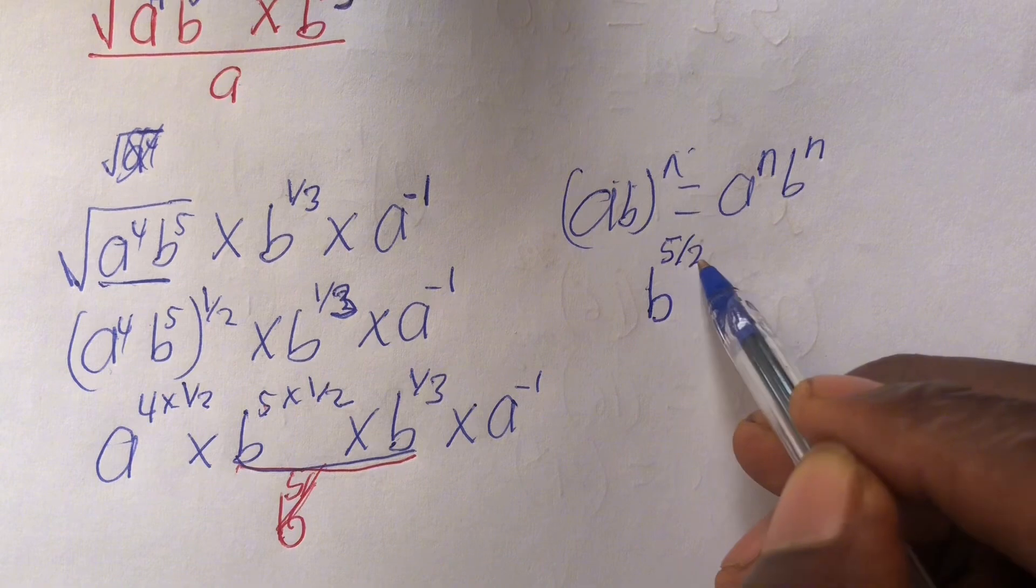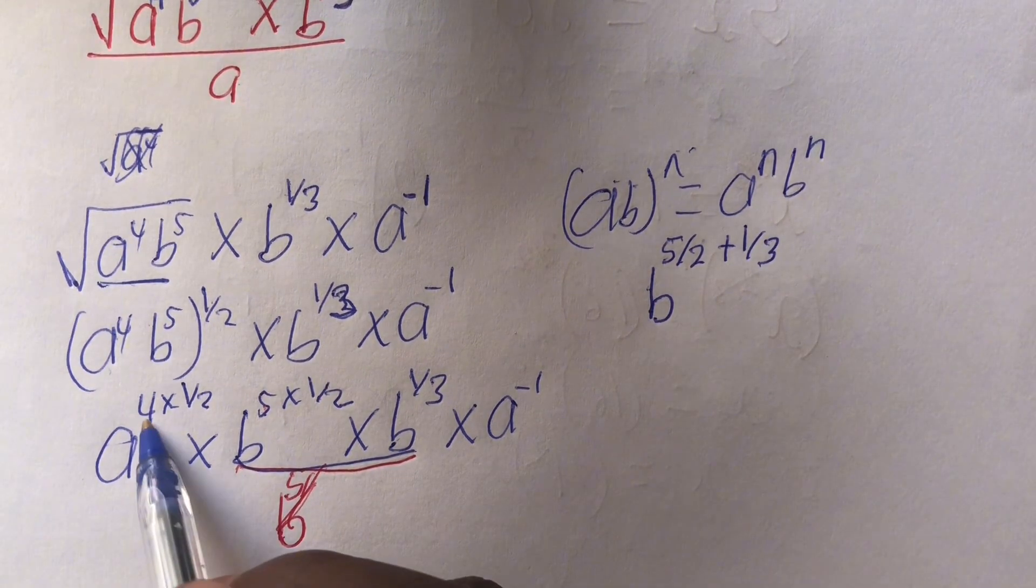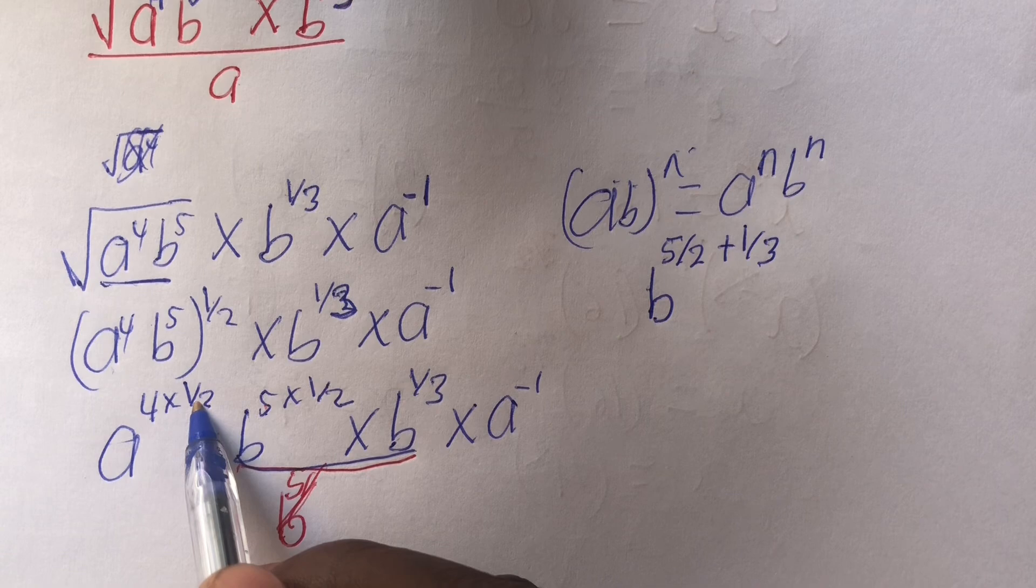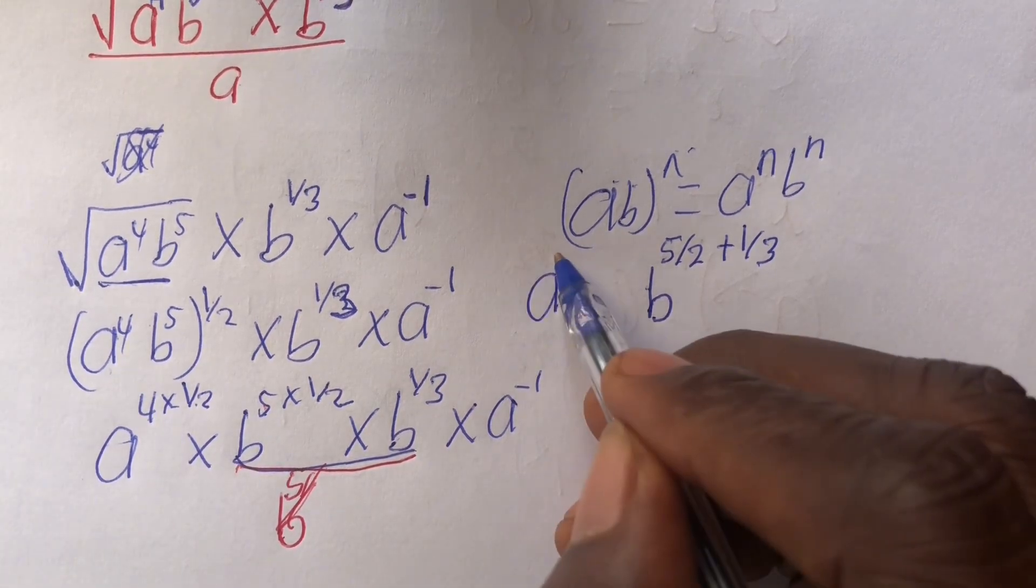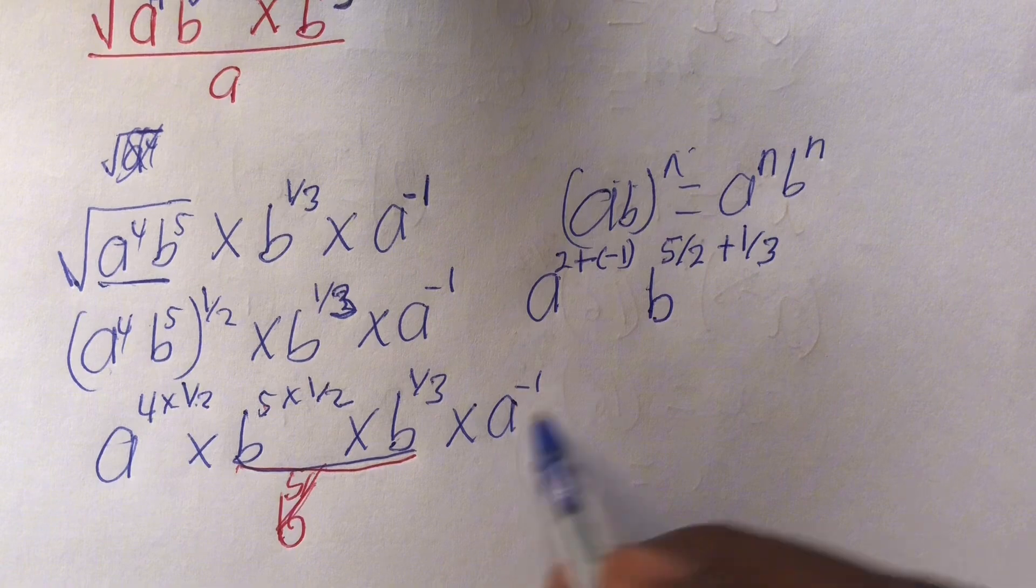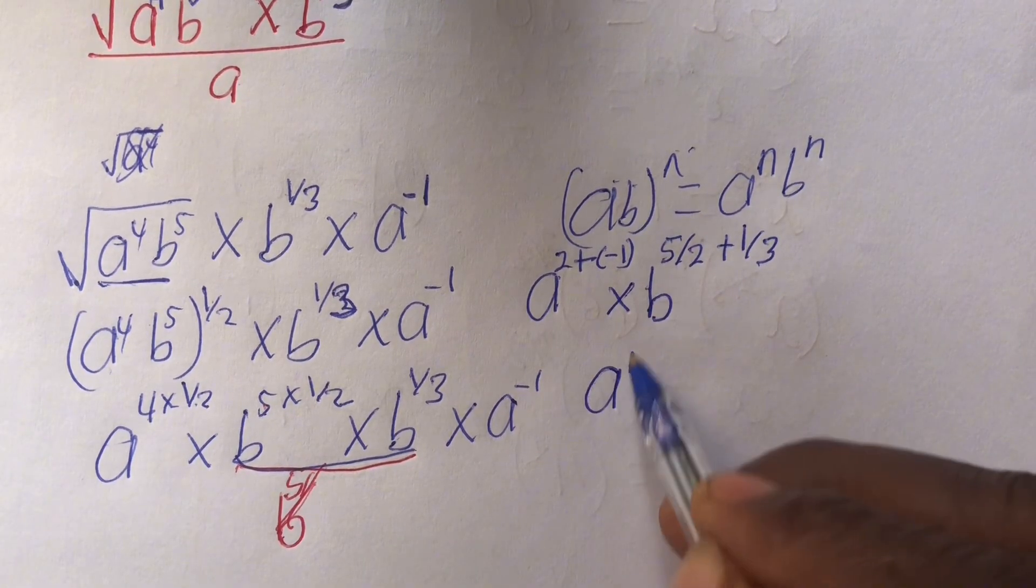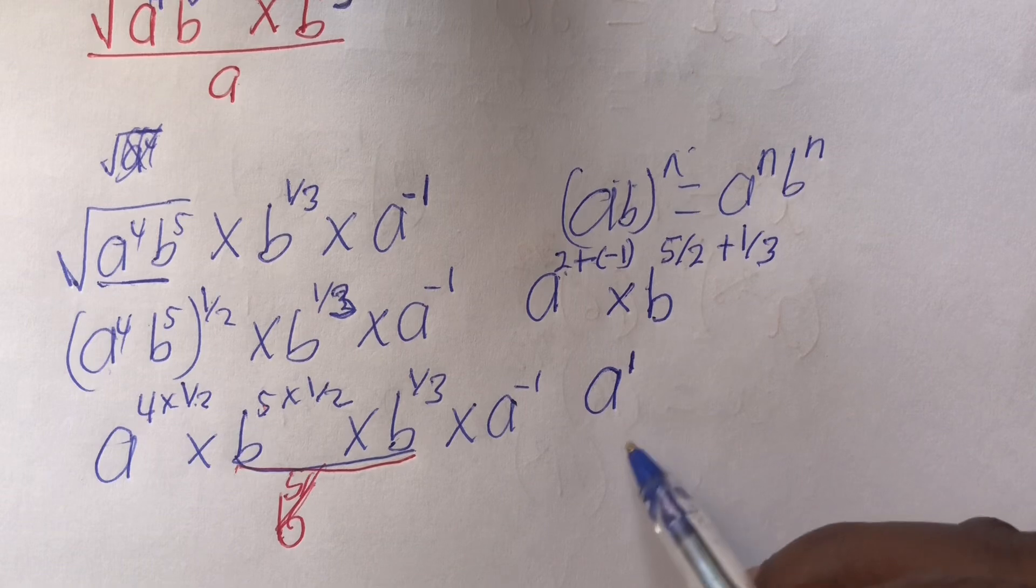That is 5 out of 2, plus 1 out of 3. Then, 4 times half gives a power 2. So we have a power 2, plus this negative 1. And they are multiplying. So this gives us a power 1. For 2 plus minus 1 gives us 1.